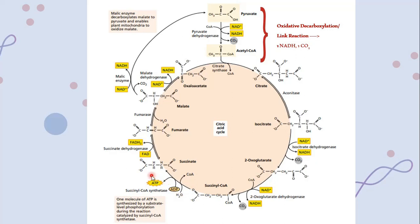Succinyl coenzyme A causes the removal of coenzyme A and addition of a water molecule, converting it into succinate. This reaction also catalyzes the formation of an ATP molecule. There is a difference between animals and plants here: in animals, GTP is produced instead of ATP, while in plants, ATP is produced directly. Succinate is then converted into fumarate by the reduction of FAD⁺ to FADH2, in the presence of the enzyme succinate dehydrogenase.